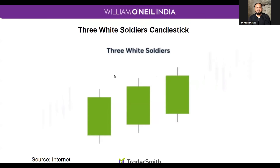The Three White Soldiers candlestick pattern generally emerges in a downtrend market. This signals that the bearish trend has almost finished and there is a shift in market sentiment. In this situation, the formation of each candlestick will start within the body of the previous one, and at the same time it will also form a higher high and higher low price structure on the daily chart.